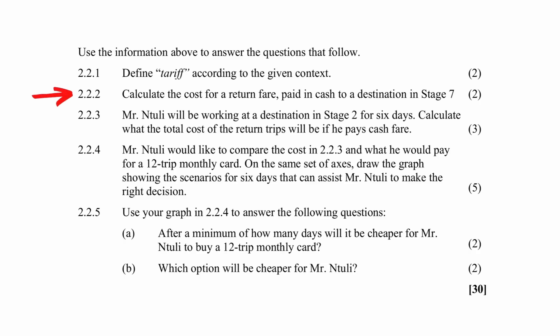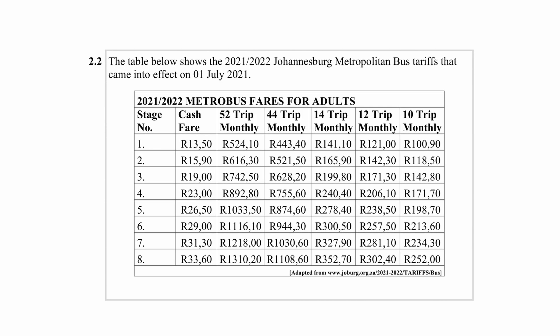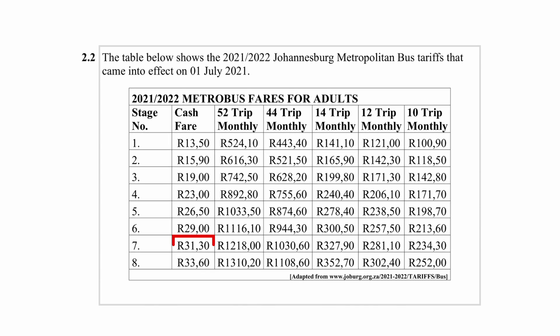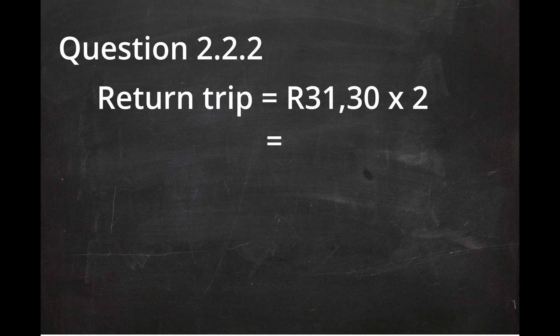Question 2.2.2 instructs you to calculate the cost of a return fare paid in cash to a destination in stage 7. A return trip means a trip from the start location to stage 7 and then back. The cash fare to stage 7 is R31.30, which is the cost of a one-way trip. So a return trip will cost R31.30 times 2, giving a total cost of R62.60.